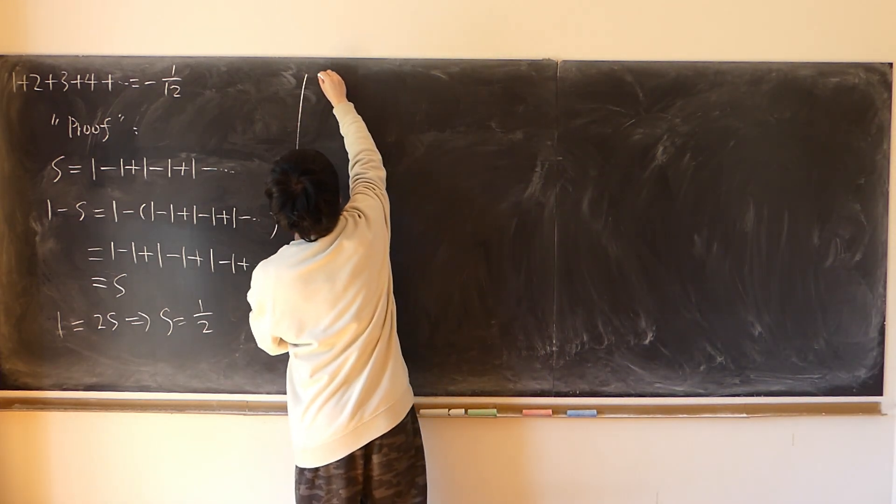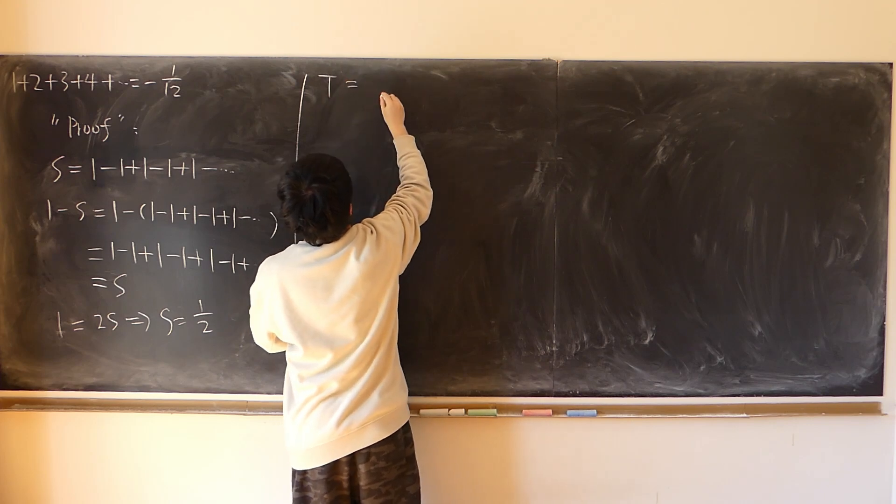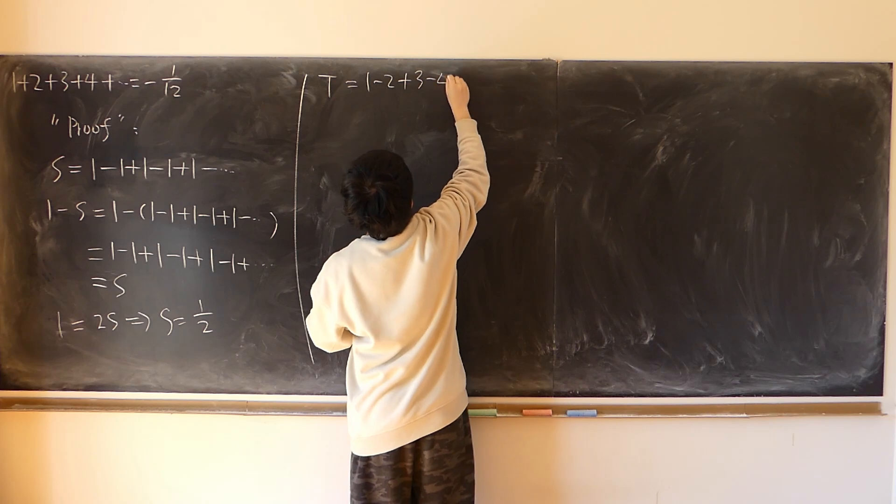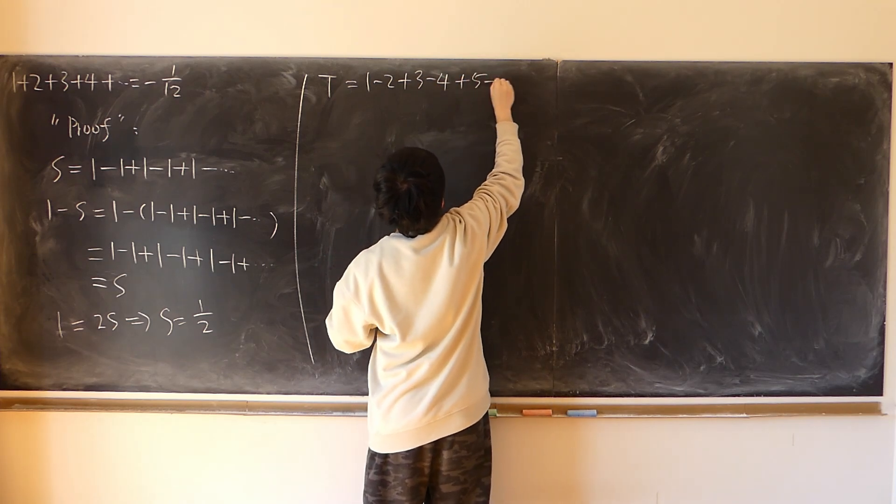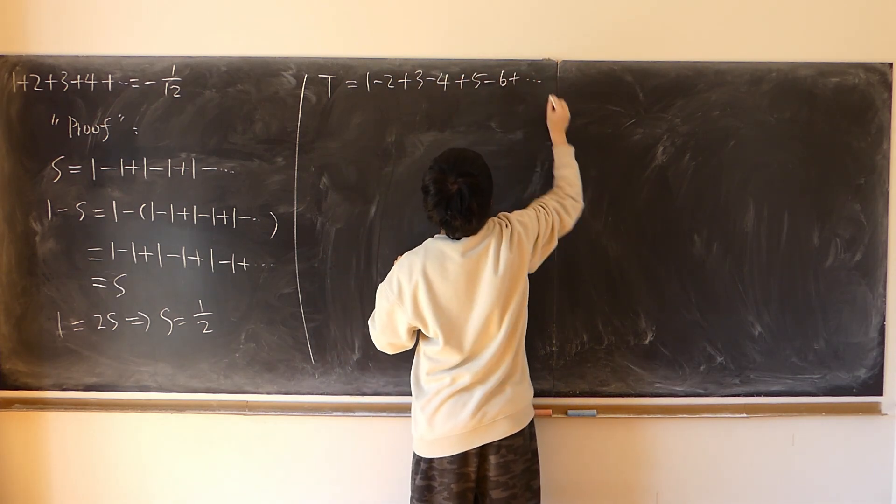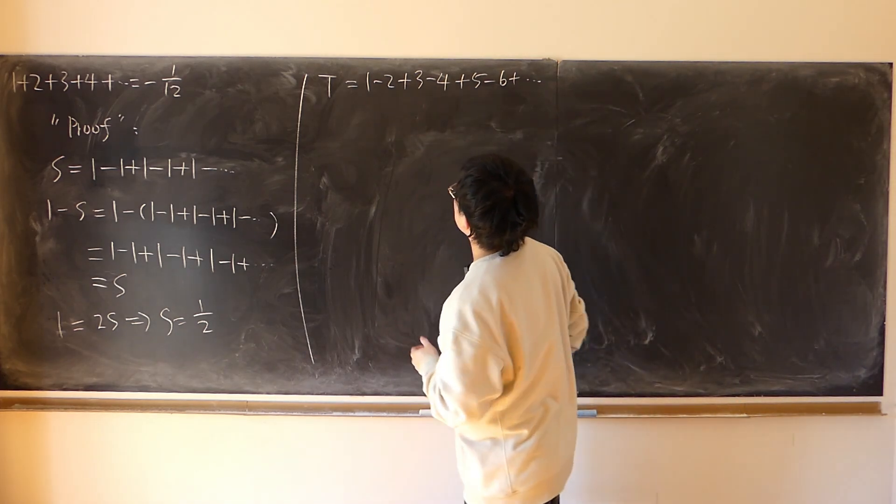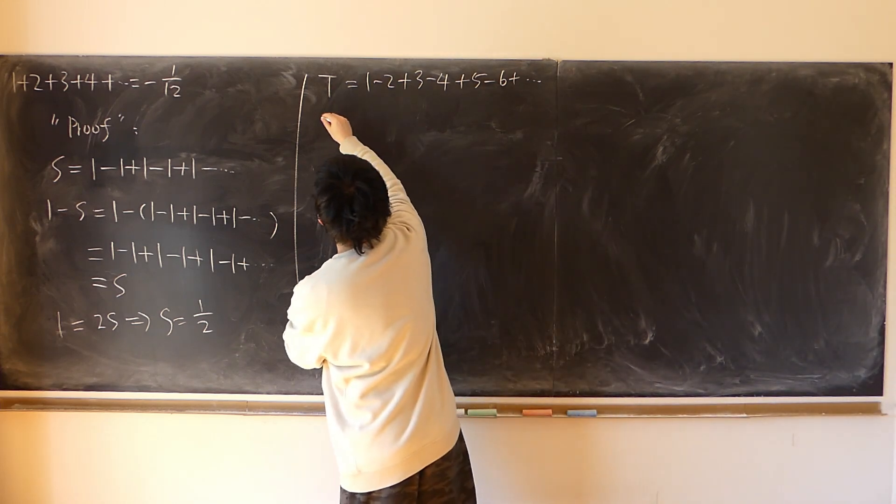And also, t denotes 1 minus 2 plus 3 minus 4 plus 5 minus 6. So all the even numbers are negative. So let me look at 2t.